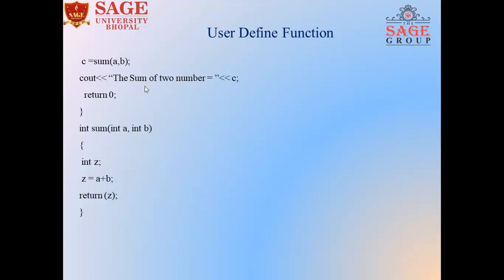If we create a user-defined function, then we will define the definition after closing the main function body. Look at here. We will use, after closing the main function body, the definition part of the user-defined function. First of all, we will write return type, after that function name, and those parameters we will pass in the user-defined function sum with data types.